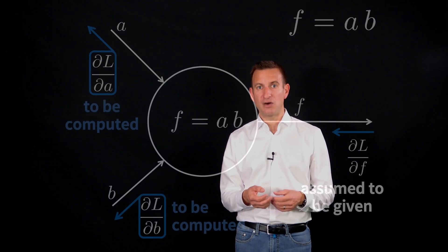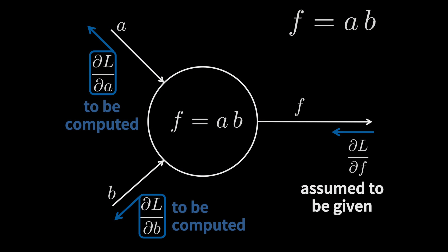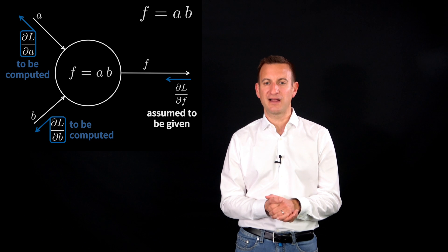If you want to dive a little bit deeper, let's inspect a single node and see how a single node actually looks like and how it is computed. So consider we have the node f equals a times b. So a function which is just a product of two values.